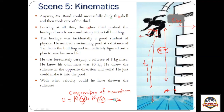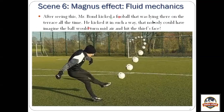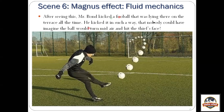You can in fact save your own life if you know all this. After seeing all this, Mr. Bond kicks a football lying on the terrace of the building. He kicks it in such a way that the football makes a swing — this is called a banana kick. In football, pro players use this kick so the goalkeeper can't judge where exactly the ball will travel. You kick it in one direction, and the ball has an internal spin so mid-air it turns in another direction and lands where the player wants it to.